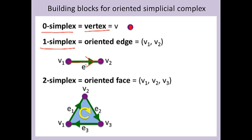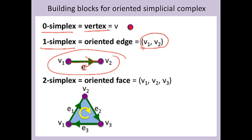We will always use pictures or a symbol such as the letter e to denote an edge, but we can also use the ordered pair v1, v2 to denote that an edge points from v1 to v2.